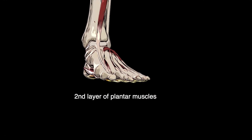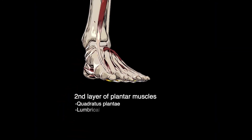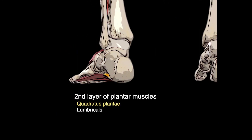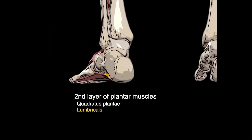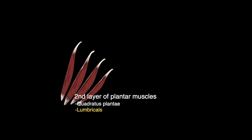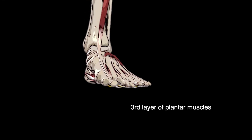The second layer of muscles at the plantar aspect of the foot acts on the second to fifth toes, producing flexion at their metatarsophalangeal joints and extension at their interphalangeal joints. The second layer consists of quadratus plantae and the lumbricals. The quadratus plantae assists the flexor digitorum longus in flexion of the toes, while the lumbricals act on the second to fifth digits, producing flexion at their metatarsophalangeal joints and extension at their interphalangeal joints. From medial to lateral the lumbricals are numbered one to four.